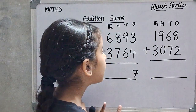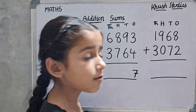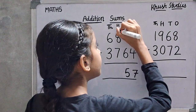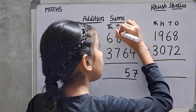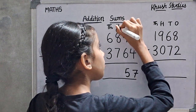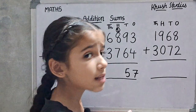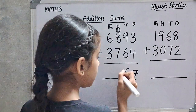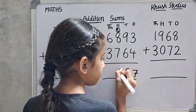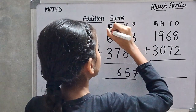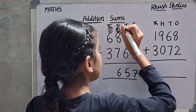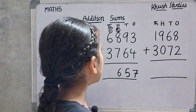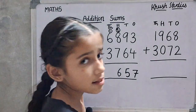Now the tens digit: 9 plus 6 is 15. You will write 1 here. 1 plus 8 is 9, and 9 plus 7 is 16. You will write 1 here. 1 plus 6 is 7, and 7 plus 3 is 10.